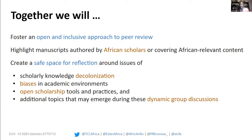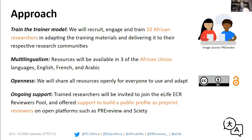We need to highlight manuscripts coming out of African scholars and create a safe space for reflection around issues of scholarly knowledge, especially decolonization. There's been pushback from researchers in the global north on decolonization of research from the continent, and because of preconceived biases it's been challenging for genuine peer review to be representative. Our approach with this African peer review project is a train-the-trainer model: we will recruit and engage about 10 African researchers and train them on how to be peer reviewers, who will in turn train fellow researchers. We need to focus on multilingualism — coming from a continent with 2,000 languages, we want to focus on African Union languages including French, Arabic, and English, with room to open up to more languages.